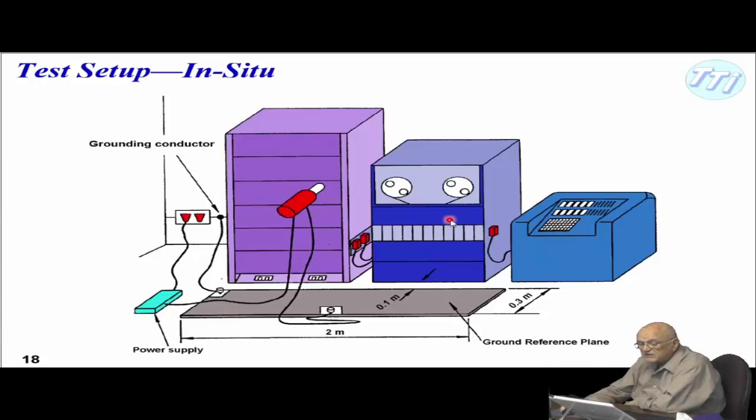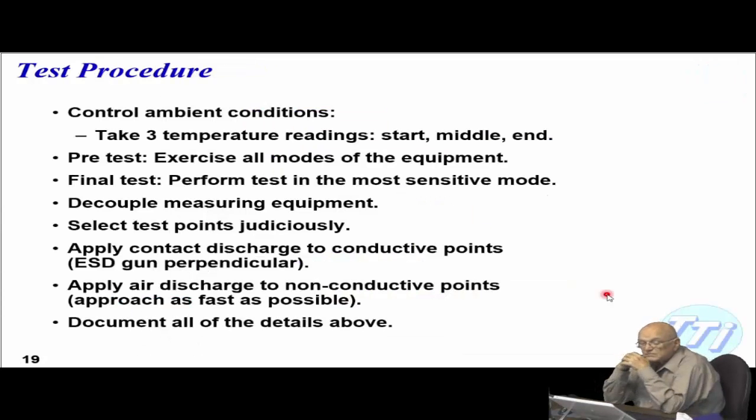As you're testing these boxes here, if you're going to test this, you actually have to move it over to that point. What happens is that you have to control ambient conditions. Take three temperature readings. At the start of the test, in the middle of the test, and at the end of the test. Why would you do that? How much electricity conducts through the air is dependent upon the temperature, the humidity and a lot of these things.